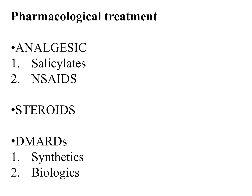After non-pharmacological treatment, we go to pharmacological treatment. We have three categories of drugs for rheumatoid arthritis: first, the analgesic category including salicylates and NSAIDs; second, the steroid category; and third, DMARDs — disease-modifying anti-rheumatoid drugs — which include both synthetic and biological DMARDs.